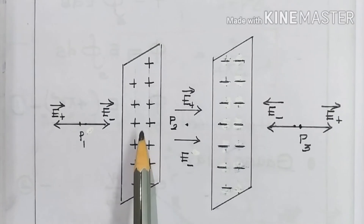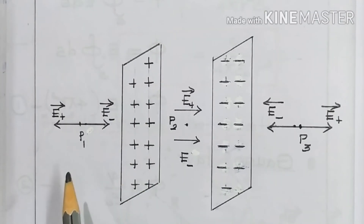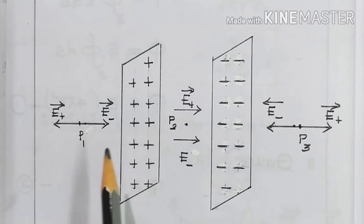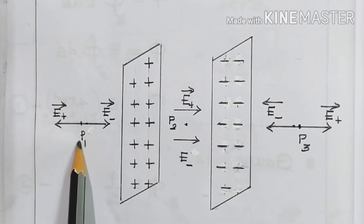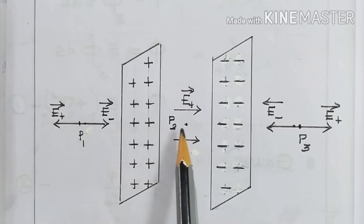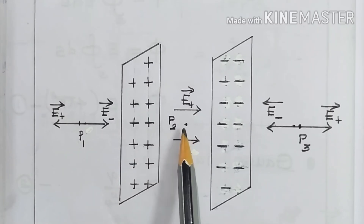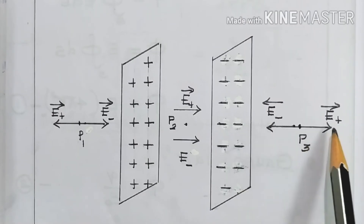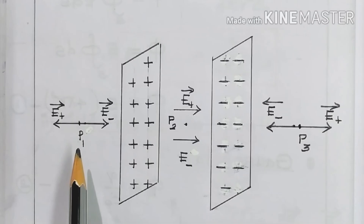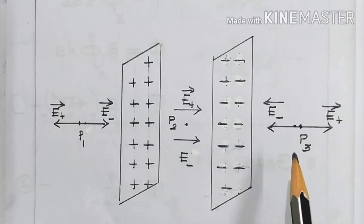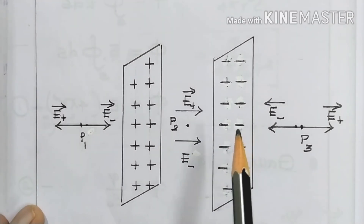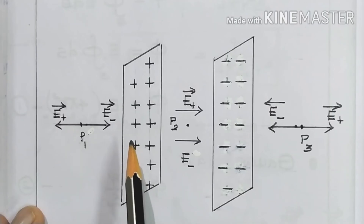Here is a sheet with positive charge and here is a sheet with negative charge. I have marked three points: P1 outside the sheets, P2 which lies in between the two sheets, and P3 which lies outside the sheet on the other side. So points P1 and P3 lie outside the sheets and point P2 lies in between the sheets.